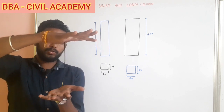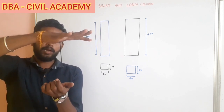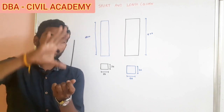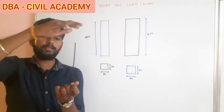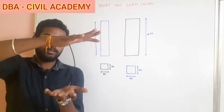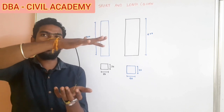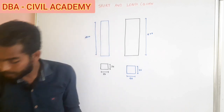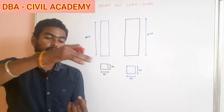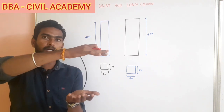When we apply the load, the axis will change. From the initial axis, the axis will deviate. This is called buckling. Buckling and bending are the same. If you apply the axial load, the bending is the buckling.